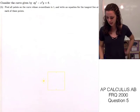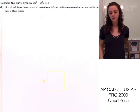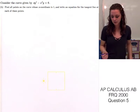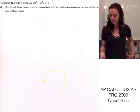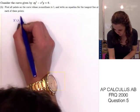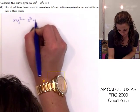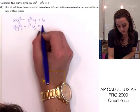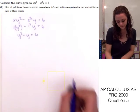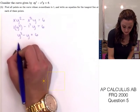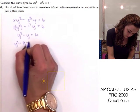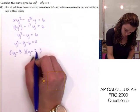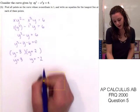Part B asks us to find all points on the curve whose x-coordinate is 1, and write an equation for the tangent line at each point. First we need to find the y values when x equals 1, by plugging 1 into the original equation xy² minus x³y equals 6. We get y² minus y equals 6, so moving 6 over and factoring gives us y equals 3 and y equals negative 2.